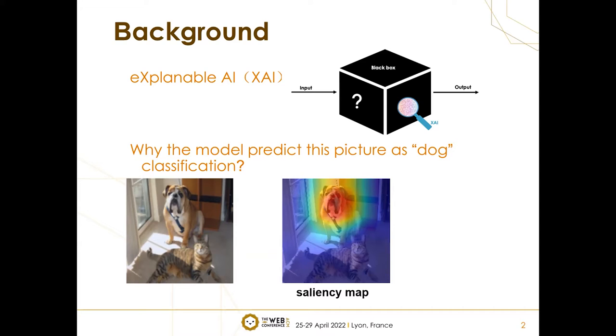For example, if we wonder why the model predicts this picture as a dog, is the model focused on the right part? Some algorithms may give the explanation by saliency map, which highlights important input pixels that influence the prediction most, and answers the question: the model predicts this picture as dog because of the right part.